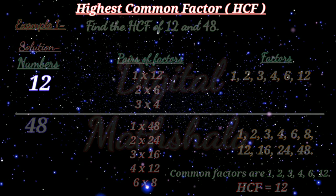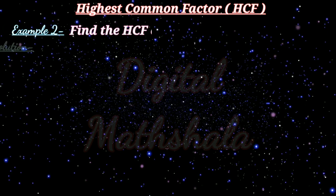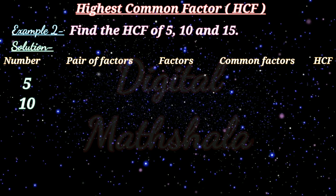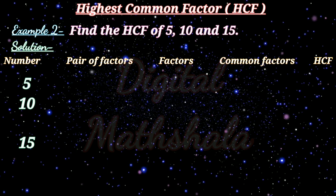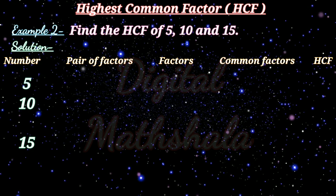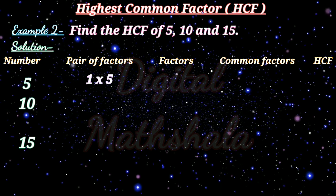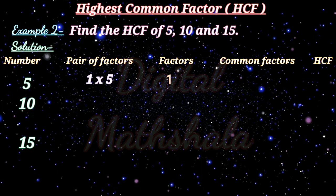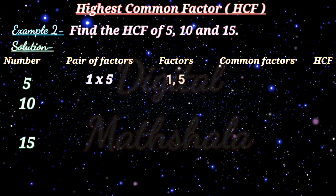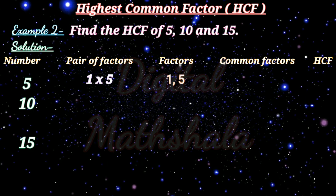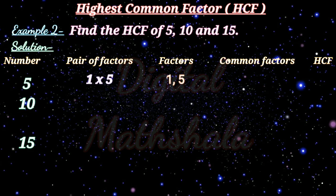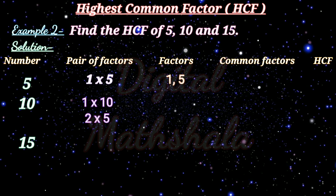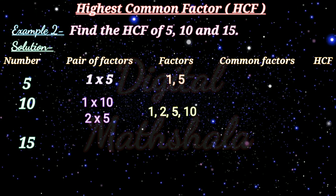Now let us solve one more example. Find the HCF of 5, 10 and 15. The pair of factors of 5 is 1×5, so factors of 5 are 1 and 5. The pairs of factors of 10 are 1×10 and 2×5, so factors of 10 are 1, 2, 5 and 10. The pairs of factors of 15 are 1×15 and 3×5, so factors of 15 are 1, 3, 5 and 15.